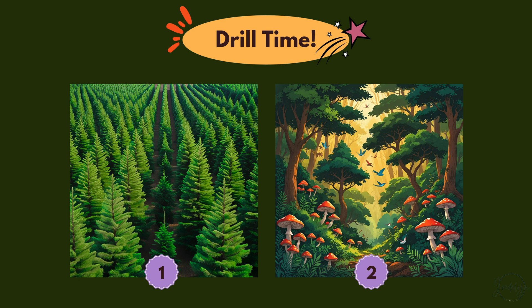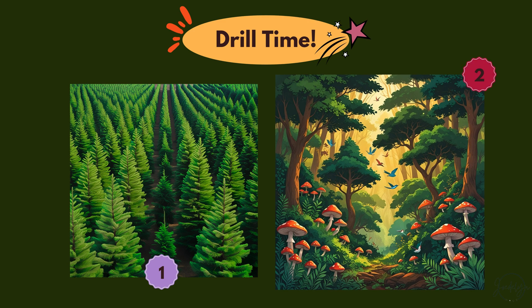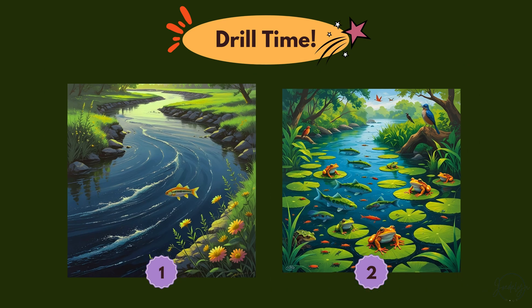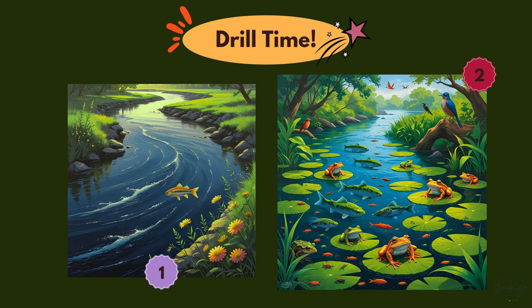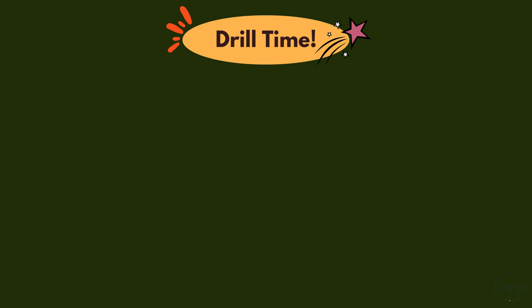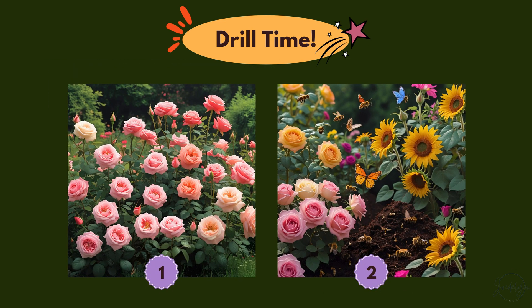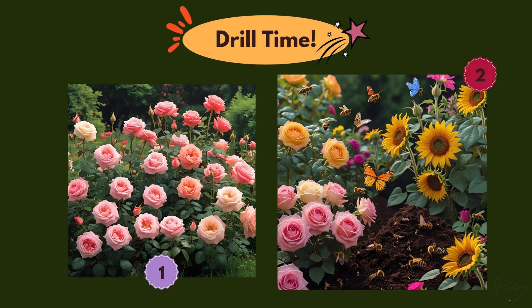Let's test your eye for biodiversity. The second picture has higher biodiversity because it includes a variety of plant and animal life living together in one ecosystem. The second river shows higher biodiversity because it supports many species across different groups — plants, amphibians, insects, and birds — all interacting in the same ecosystem. The second garden clearly has more biodiversity because it includes multiple plant species, pollinators, and soil organisms working together to support a healthy environment.